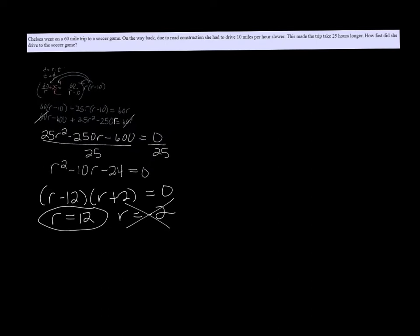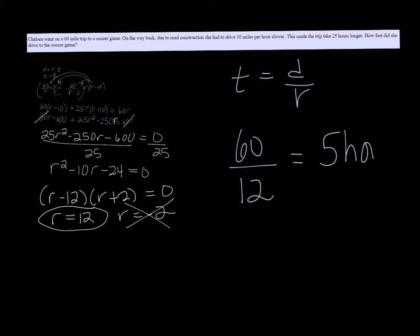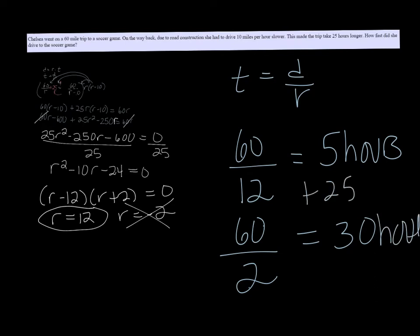Time is equal to distance over rate. So now that we have the rate, we know it was 60 miles, so 60 over 12 miles per hour would give us a time of 5 hours. So it took her 5 hours to get there. But she went 10 miles an hour less than that on the way back, so 60 divided by 2 is 30 hours. So you can see if you add 25 to the 5, then you get the 30 hours, so it works out.